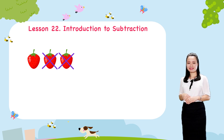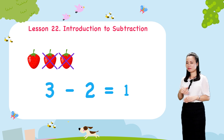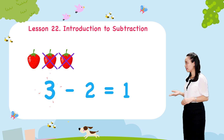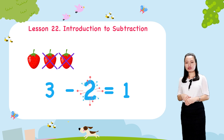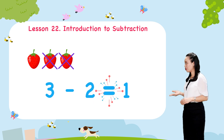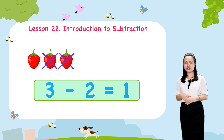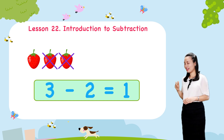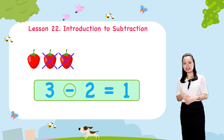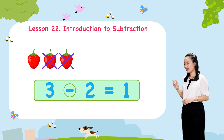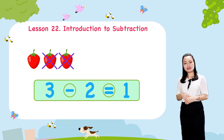Using numerals, we write and say: three minus two equals one. Remember, this is subtraction. This is the minus sign that indicates subtraction. This is the equals sign.